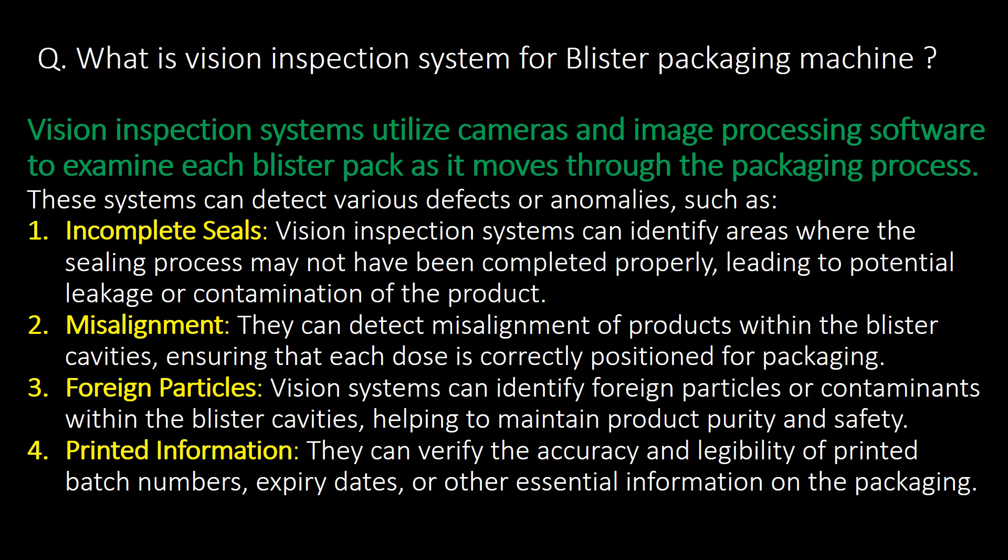What is a vision inspection system for a blister packaging machine? Vision inspection systems utilize cameras and image processing software to examine each blister pack as it moves through the packaging process. These systems can detect various defects or anomalies such as incomplete seals, misalignment, foreign particles, and printed information.